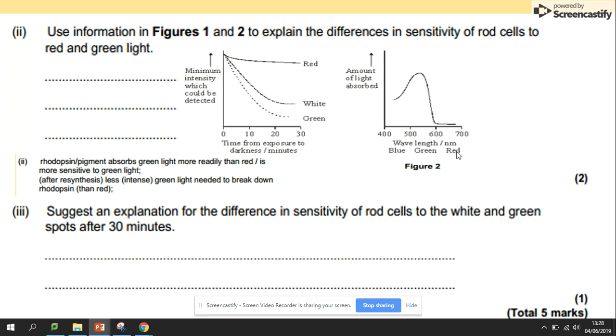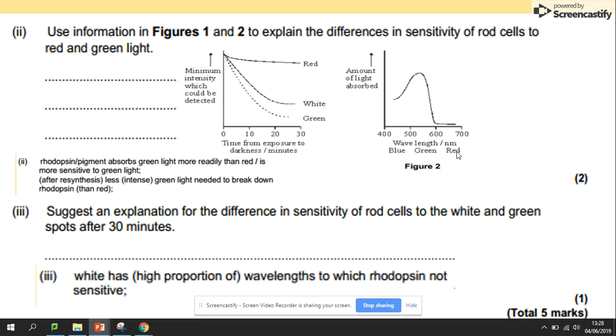Suggest an explanation for the difference in sensitivity of rod cells to the white and green spots after 30 minutes. The white has a high proportion of wavelengths to which rhodopsin is not sensitive, so it's not going to respond.